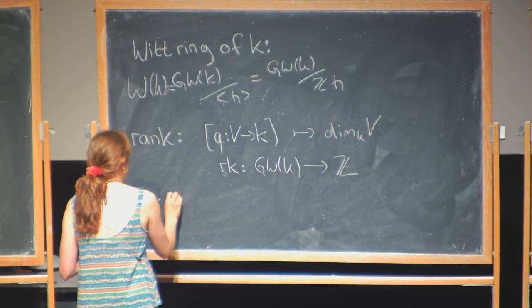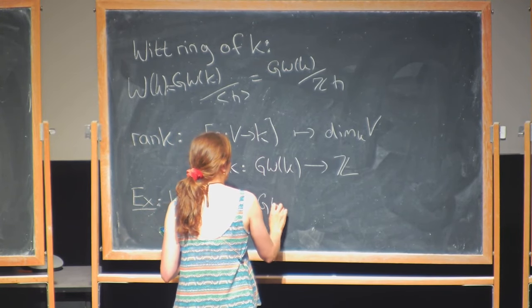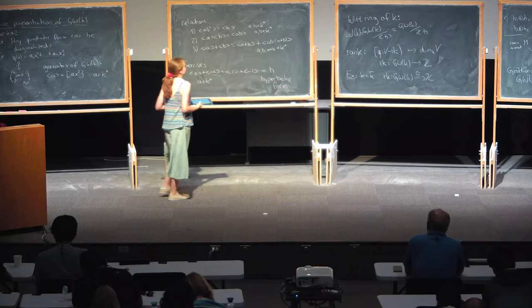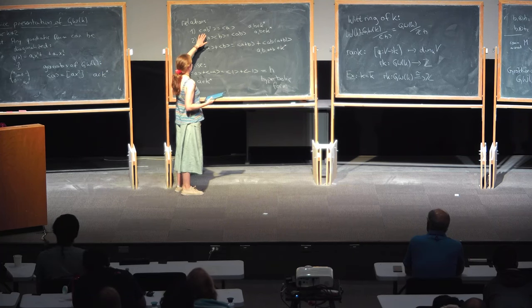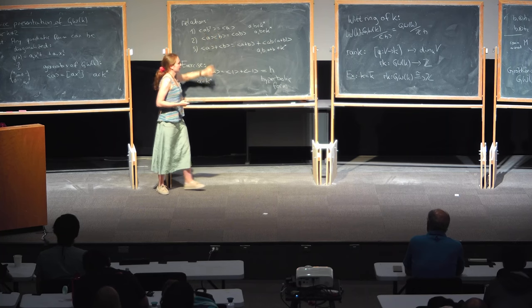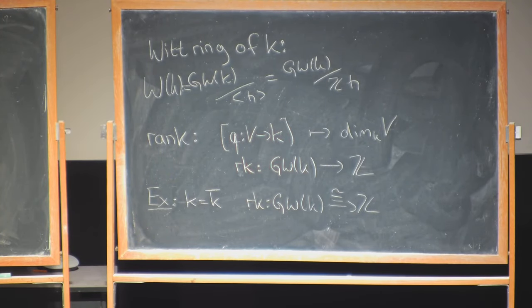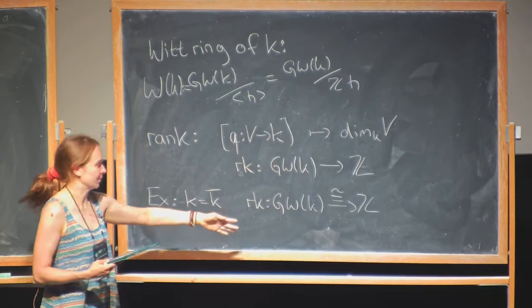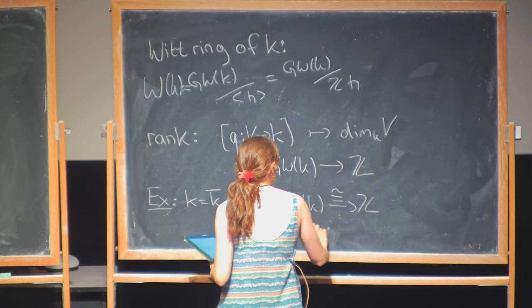For example, if K is algebraically closed, the rank homomorphism is an isomorphism. The reason: every rank-1 form [a] = [1] by the first relation, so there is only one generator and all relations become trivial. In particular, GW(ℂ) ≅ ℤ, and the Witt ring W(ℂ) = ℤ/2ℤ.